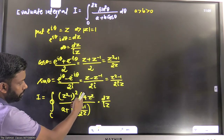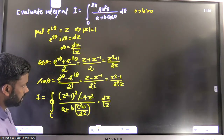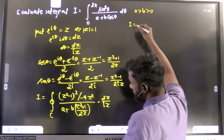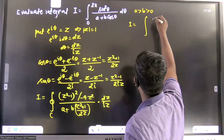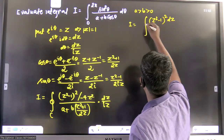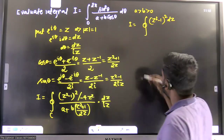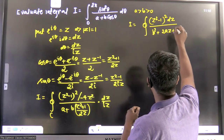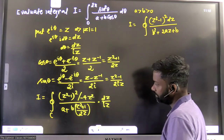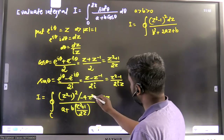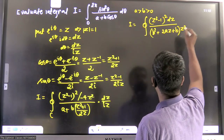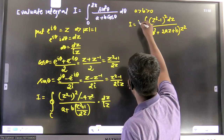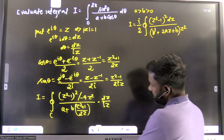Taking the LCM and simplifying, the factors of four and two cancel, and bringing iota to the numerator gives a factor of minus iota. The integral becomes a closed loop integral of (z² − 1)² dz, with the denominator becoming b·z² + 2az + b, times z², and an overall factor of 1/(2i) outside.